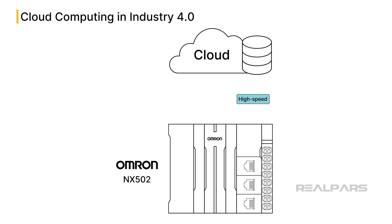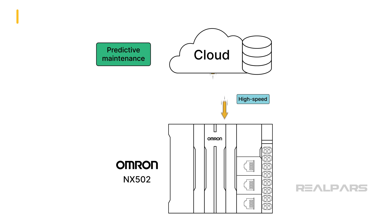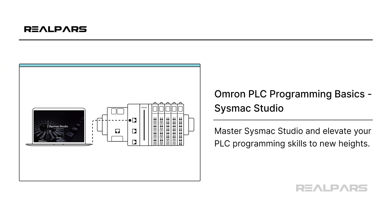High-speed database communication has revolutionized industrial automation, as real-time process analysis and control is now a reality. Automation companies like Omron provide high-speed database communication-enabled controllers like the NX502, designed to process critical data rapidly. This capability plays a key role in supporting predictive maintenance by enabling quick and efficient data analysis. If you want to learn more about programming Omron PLCs and get a certificate from Omron, visit realpars.com/courses, or check out the link in the video description.